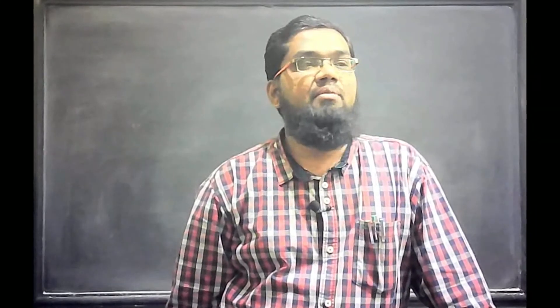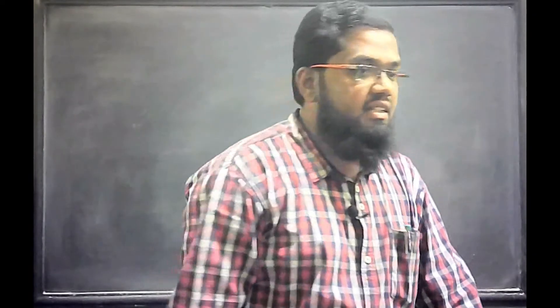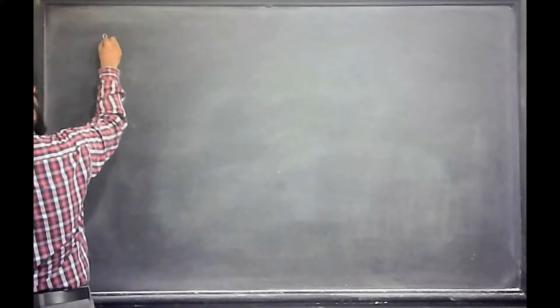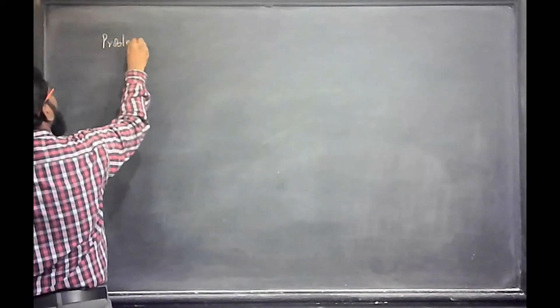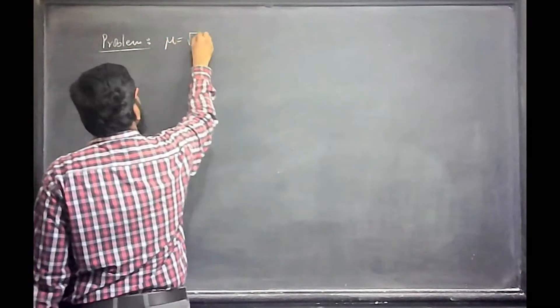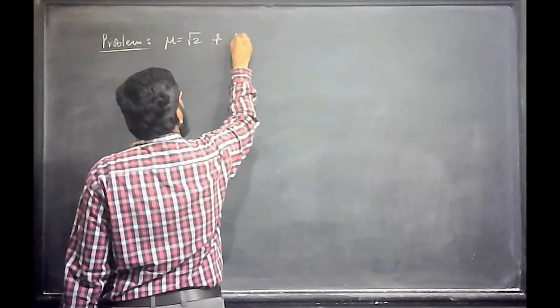Let us take a simple problem to use that formula. The problem is as follows: A given prism has a refractive index √2 and angle of 60 degrees.